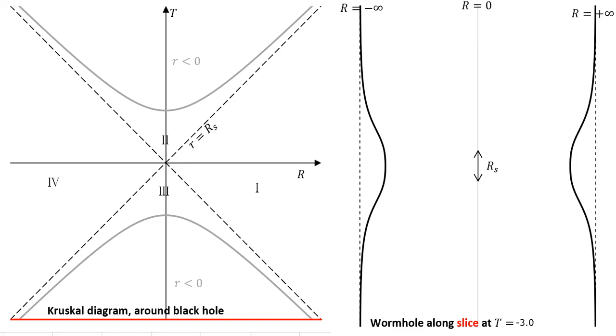On the left we've got a Kruskal diagram around a black hole. That's with the normal TR time and distance coordinates changed a bit.